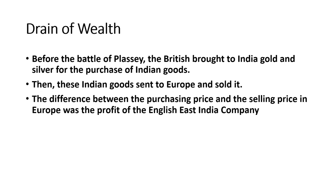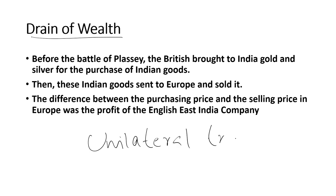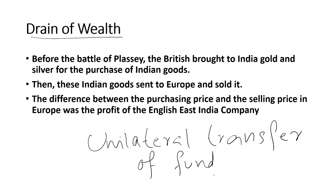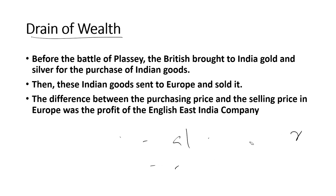Now, the third economic impact of the British rule was drain of wealth. Drain of wealth simply means unilateral transfer of funds — the funds flowed only to one side, towards Britain. This came to be known as drain of wealth. As you know, the British traders came to India as trade aids. From the establishment of the English East India Company in 1600 to 1757, the British brought gold and silver as bullion for the purchase of Indian goods for export to Britain.